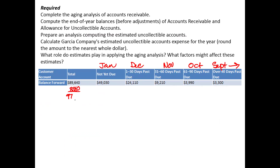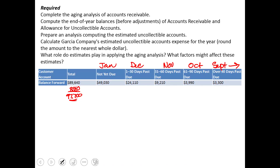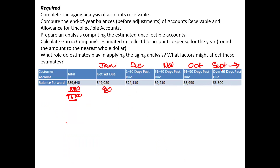We're going to analyze the $8,060 to reach the $97,700 total. The first account is B. Smith, who owes us $930 due in January of next year, so I put that in the not yet due column. The second one, El Wing, owes us $645 and it was due December 24th, so it's 1 to 30 days past due — $645.